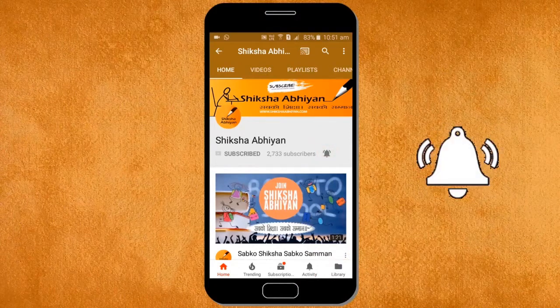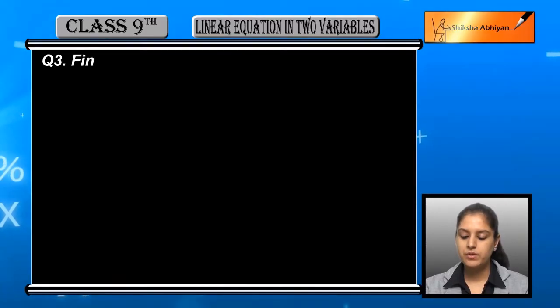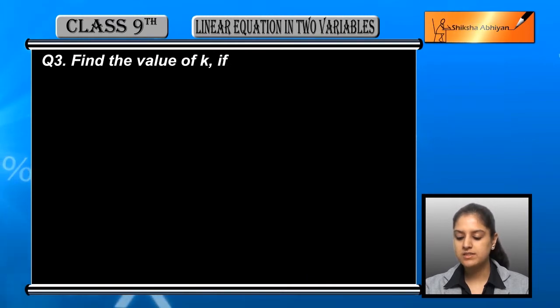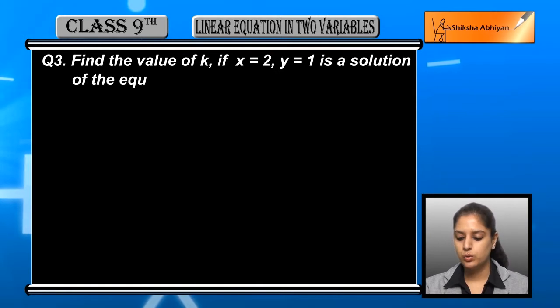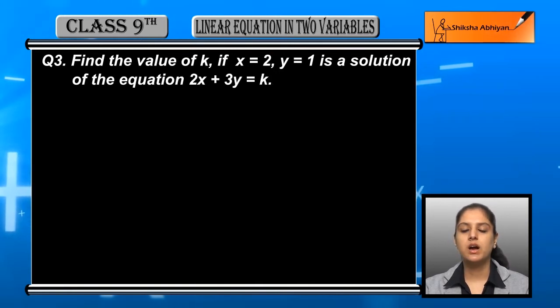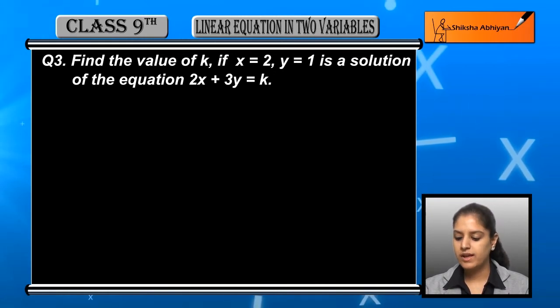The next question is: Find the value of k if x = 2, y = 1 is a solution of the equation 2x + 3y = k. If an equation is 2x + 3y = k and its solution is already given, that is x = 2 and y = 1, so k's value in the equation you have to find out.